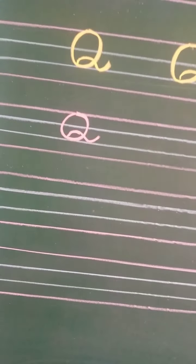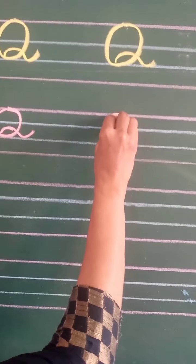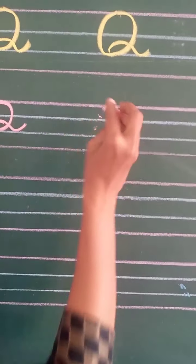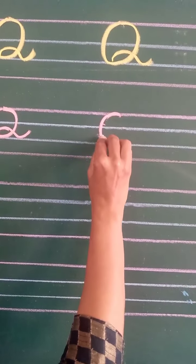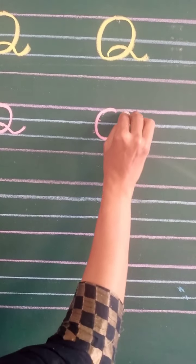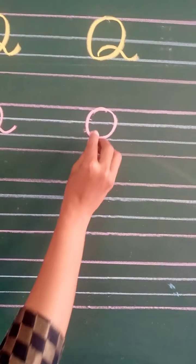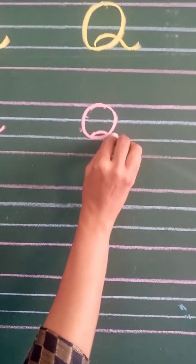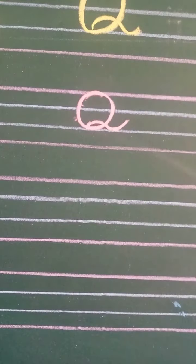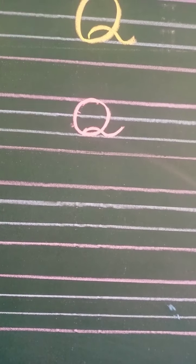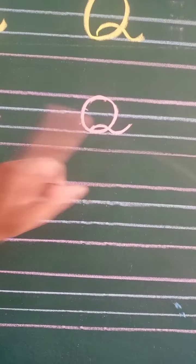This is Q. Again, look here. Make a curve, go round and go up. Like this. Now over here, again make a curve and touch the second blue line and go up. This is Q.